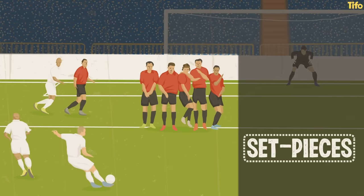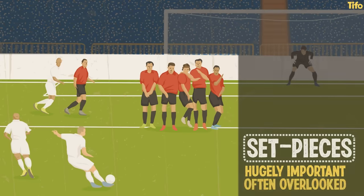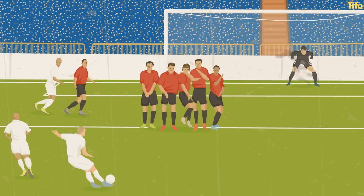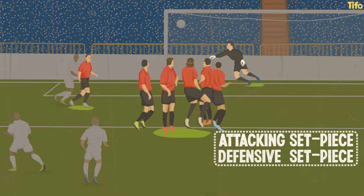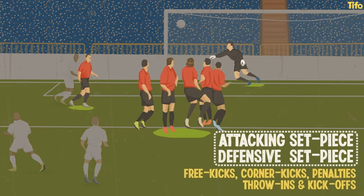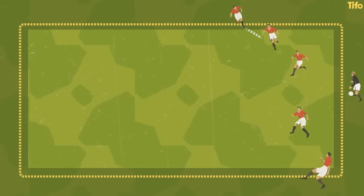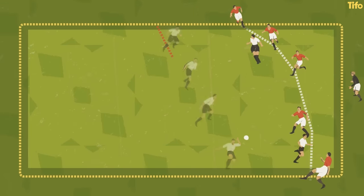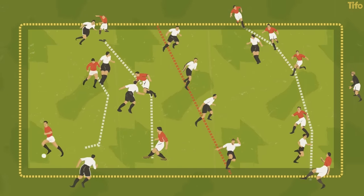Set pieces, accepted as a phase of play by most, are a hugely important part of the game, though they can often be overlooked. For every attacking set piece there is, of course, a defensive set piece for the opposition. These include free kicks, corners, penalties, throw-ins and even kick-offs. With football becoming increasingly dissected and analysed, principles and sub-principles for each phase will only continue to develop.